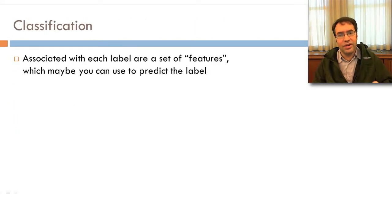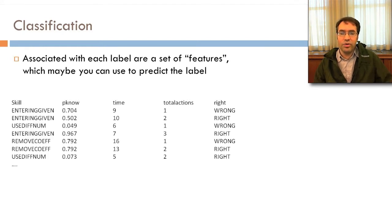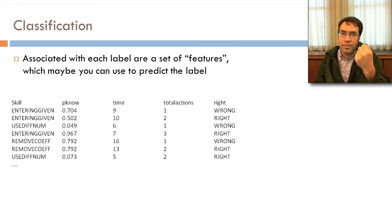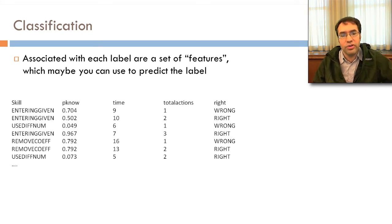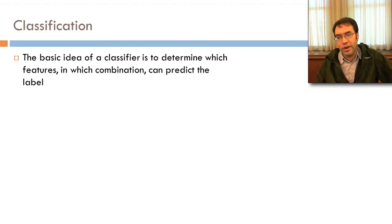In classification, associated with each label are a set of features — the predictor variables — which you can use to predict the label, the predicted variable. For example, maybe you want to predict if the student is right or wrong, and you can do that from the p-know (the probability the student knows the skill), the time taken for the action, the total number of student actions, and maybe the skill too. The basic idea of a classifier is to determine which features, in which combination, can predict the categorical label.